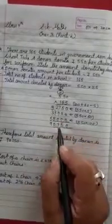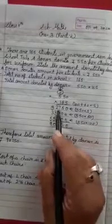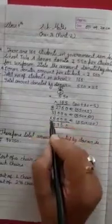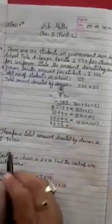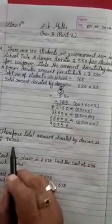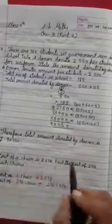Now we will add them. 0 is 0. 5 is 5. 7 is 7. 2 and 3, 5 and 5, 10. Write 0 carry 1. 5 and 3, 6, 7, 8 and 1, 9. So, the donor donated 90,750 rupees.